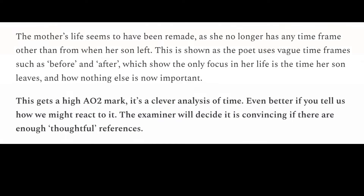The mother's life seems to have been remade, as she no longer has any time frame other than from when her son left. This is shown as the poet uses vague time frames such as before and after, which show the only focus in her life is the time her son leaves and how nothing else is important. This is actually a brilliant bit of analysis — I love it, because I'd never noticed this before. Before and after is a bit like BC and AD, when we refer to Christ. We can see how they balance either side of this momentous occasion when her son left — both literally when he's left the house, but also more permanently and metaphorically, he's left through dying. This clever analysis of time gets a really high mark for AO2. I'm convinced by it — I'm putting it in level 6.